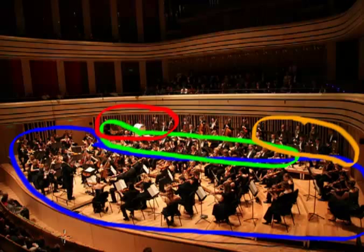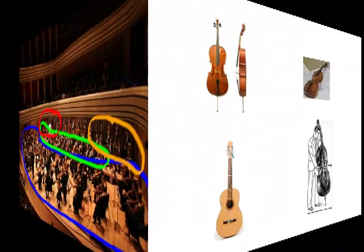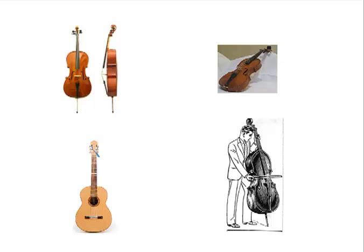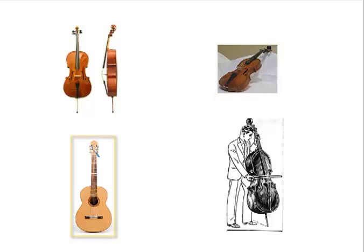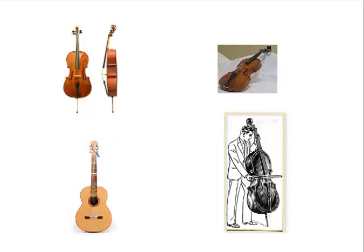So these instruments can be classified into four basic types. The first type is called strings. These include instruments like the cello, violin, guitar, bass, and many more. What makes a stringed instrument what it is is, well, just what the name implies.